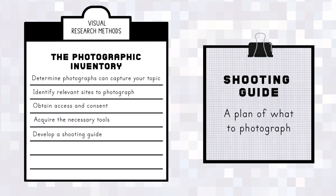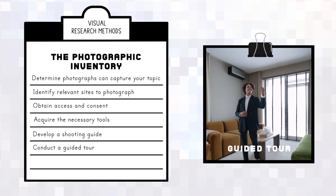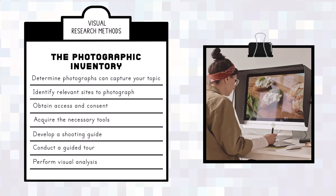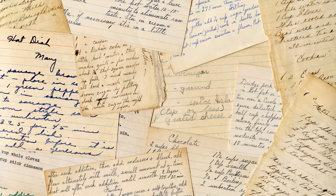Though not mentioned by Collier, my experience is that the photographic inventory is enriched when an informant directs the researcher towards the most relevant objects and views, acting as a tour guide. Upon conclusion, the photographs are subject to visual analysis. My own research into information in the hobby of gourmet cooking demonstrates this technique.